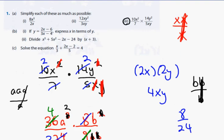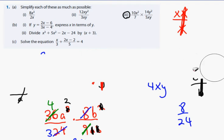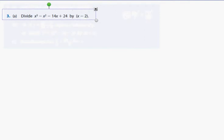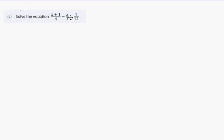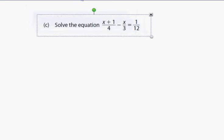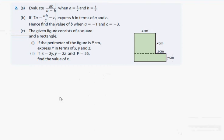Is there any other parts of question 1 you'd like me to do? You're all happy enough? Okay, we'll move on. Next one we'll move on to is question 2c. And what we notice here is the figure consists of a square and a rectangle. If the perimeter of the figure is p, express p in terms of x, y, and z.